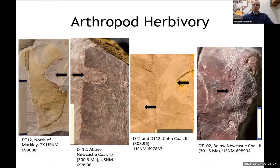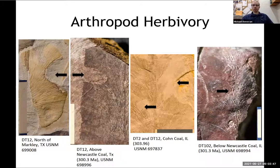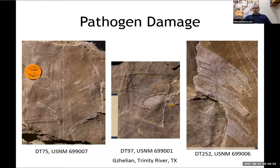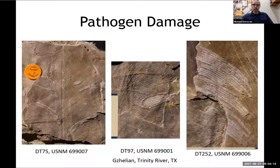I found a lot of examples of arthropod herbivory on Macroneuropterus. A lot of it is margin feeding — things like with chewing, organisms could feed on the leaves consuming leaf tissue. There's also oviposition, where an insect inserted its ovipositor to lay its eggs into the leaf. There's also a lot of pathogen damage — not made by animals but by fungi, bacteria, or viruses — and this is pretty common throughout the history of Macroneuropterus.